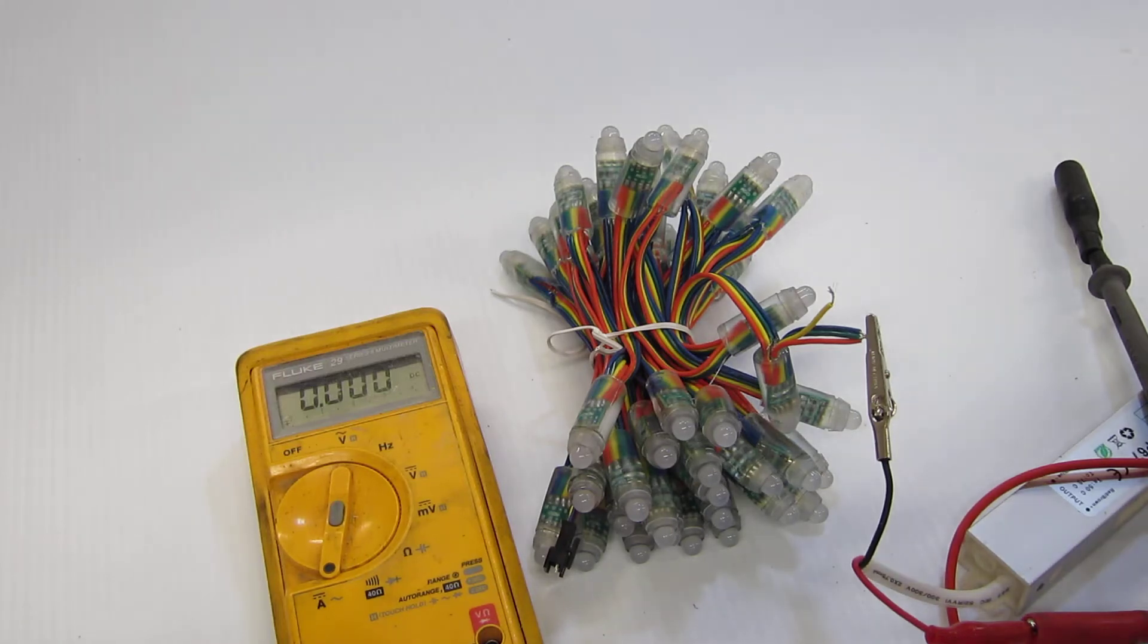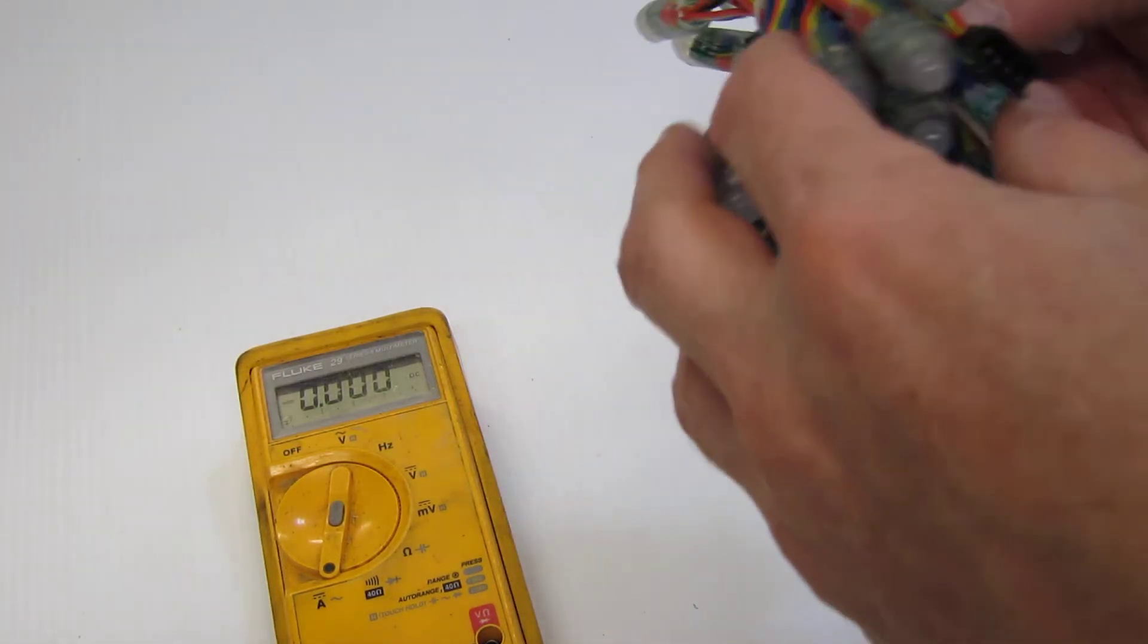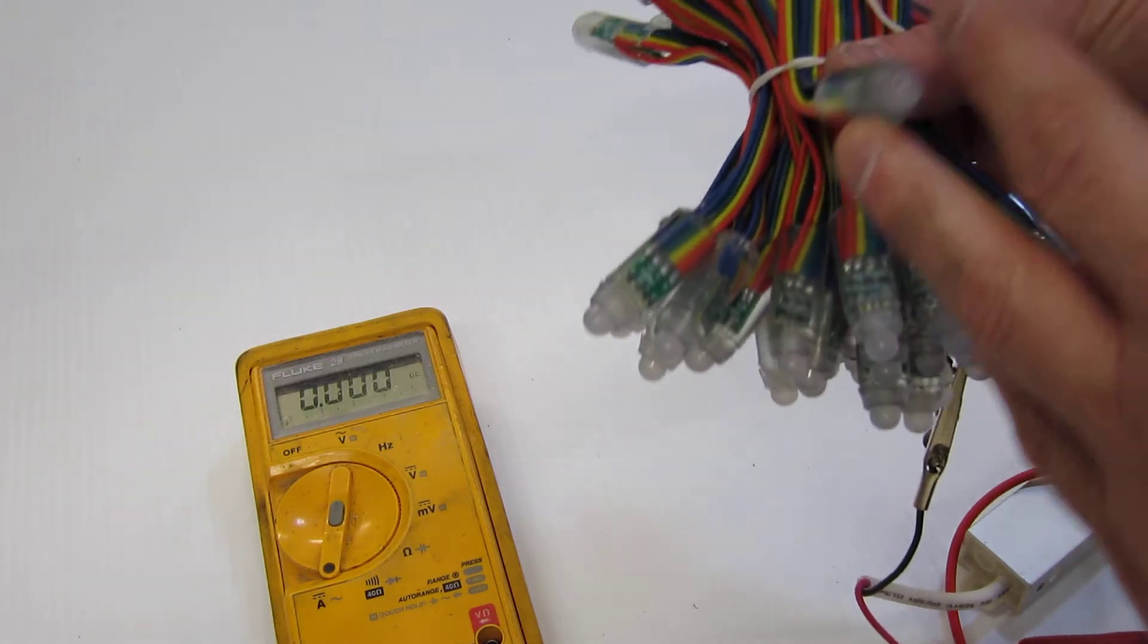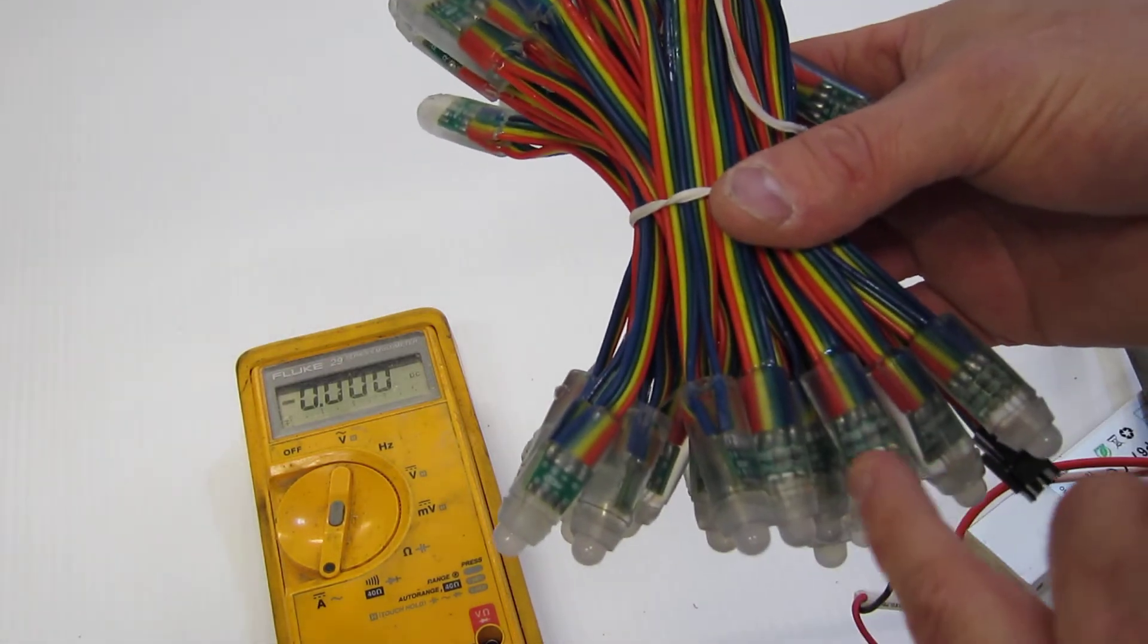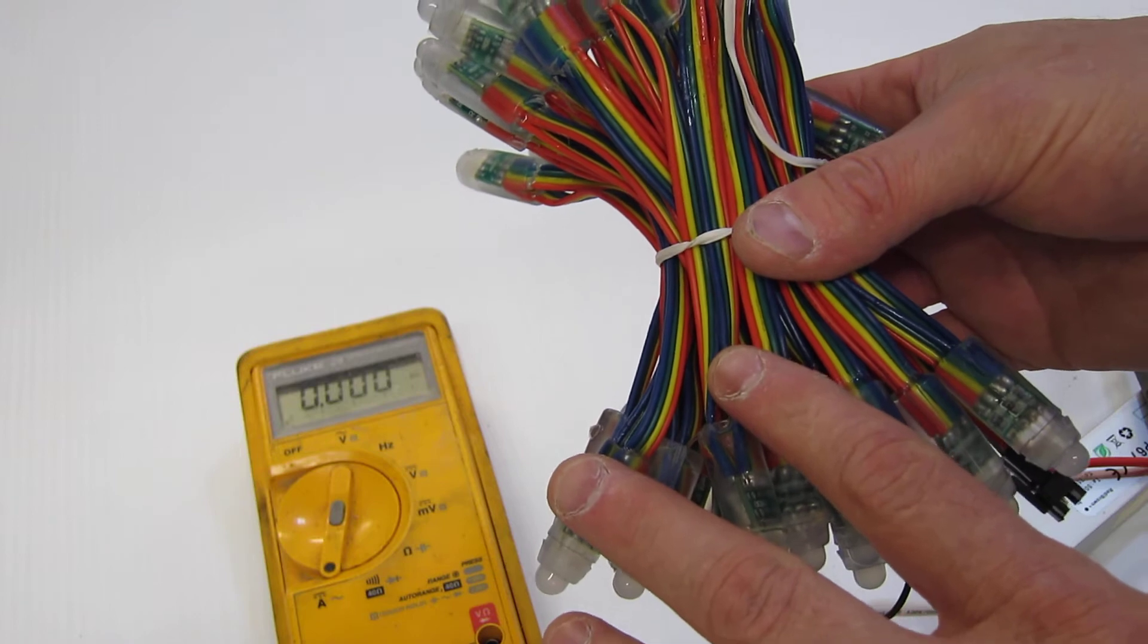This video explains how to measure current draw of RGB devices. This is a particular RGB basic dumb node. These just consume 12 volts.